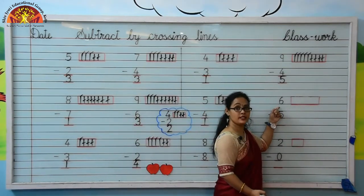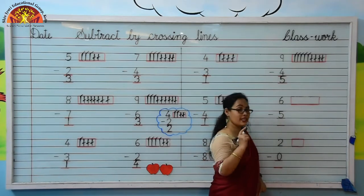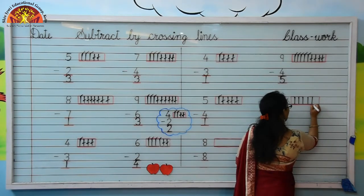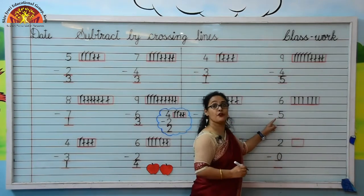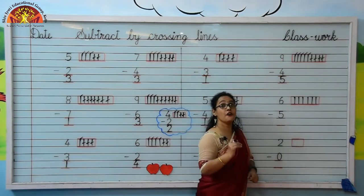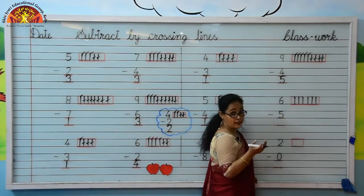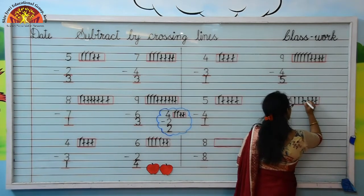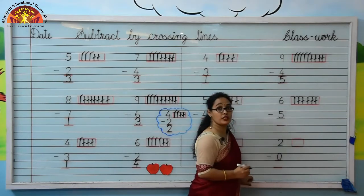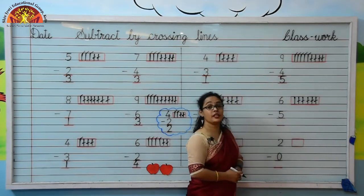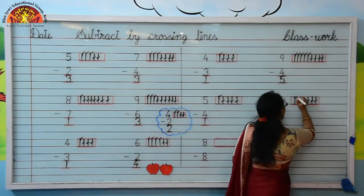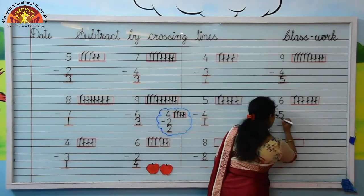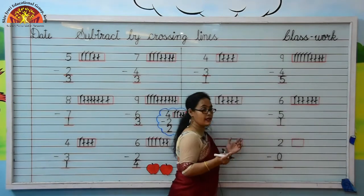Next number is 6. So kids, draw 6 lines: 1, 2, 3, 4, 5, 6. The downside is 5. Kids, we will cross 5 lines from 6 lines. Let's cross with me: 1, 2, 3, 4, 5. Kids, now you tell me how many lines are left. Yes, let's count: 1. Yes, 1 is left there. So kids, your answer is 1. Move to next.